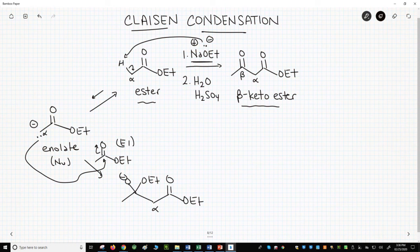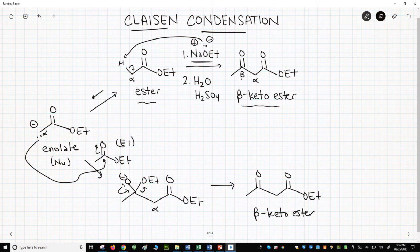From the tetrahedral intermediate, we can look for a leaving group. We have one in the ethoxy group. The O- ejects the leaving group, and we get our beta-keto ester.